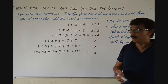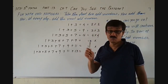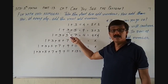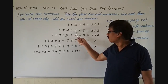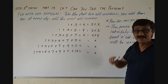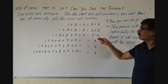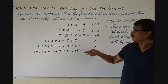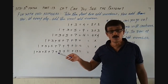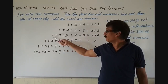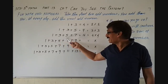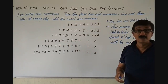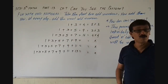Now let's add the first 3 odd numbers: 1, 3, and the next odd number 5. So 1 plus 3 plus 5 is equal to 9. 9 is equal to 3 multiplied by 3. Then, adding the next odd number 7: 9 plus 7 is 16. And 16 is 4 multiplied by 4.